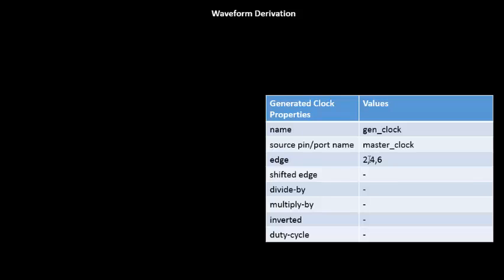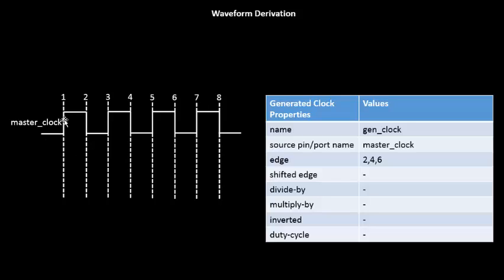It's very simple. We know what the edge means, and we know what the name, source pin, master pin, and port name mean. So we have the master clock with this particular waveform, and the edge numbers are written here: first edge, second edge, third edge, and so on. What the table says is the first rising edge of the generated clock arrives at the second edge of the master clock. So let's draw that — the first rising edge arrives at the second clock edge of the source clock.